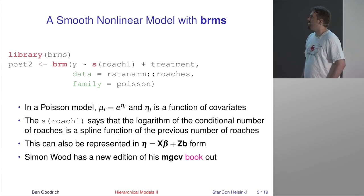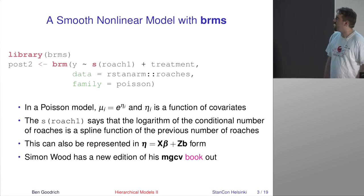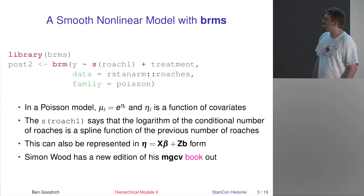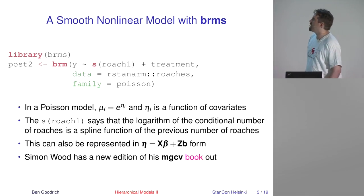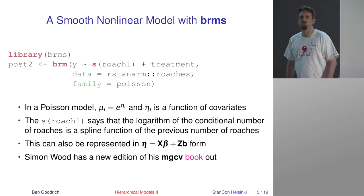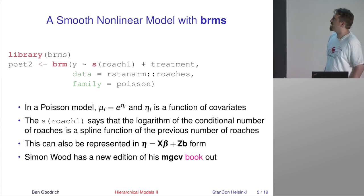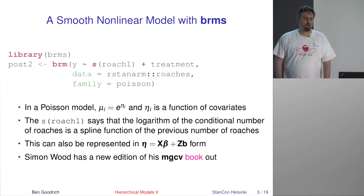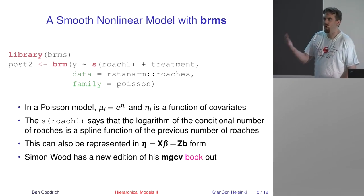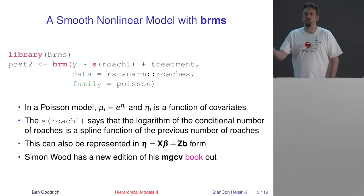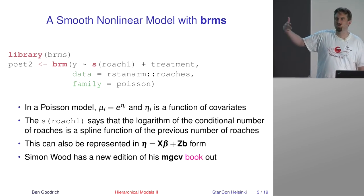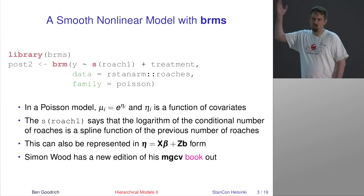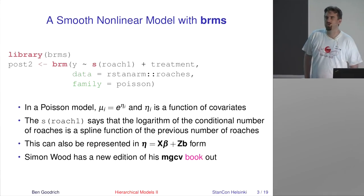BRMS is another package that uses Stan behind the scenes. It has pretty much one estimation function called BRM used to estimate all its models. Here we have a model using the roaches dataset, which comes in the rstanarm package but is used in some of Andrew Gelman's books. It comes from an experiment on the prevalence of roaches.